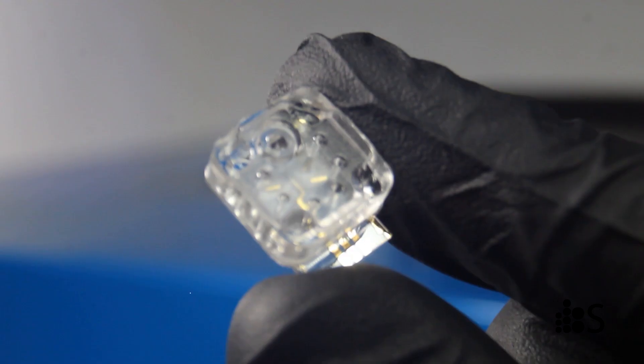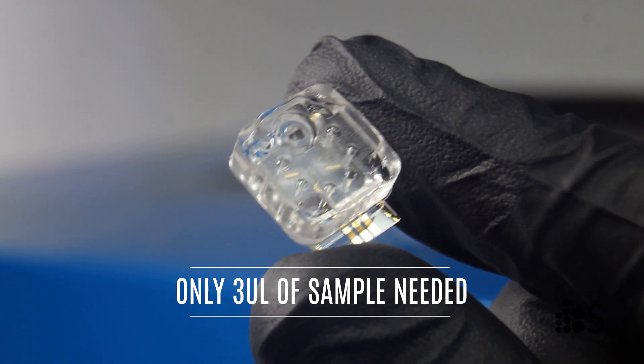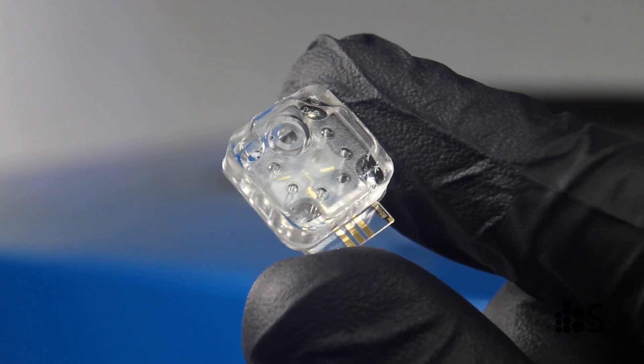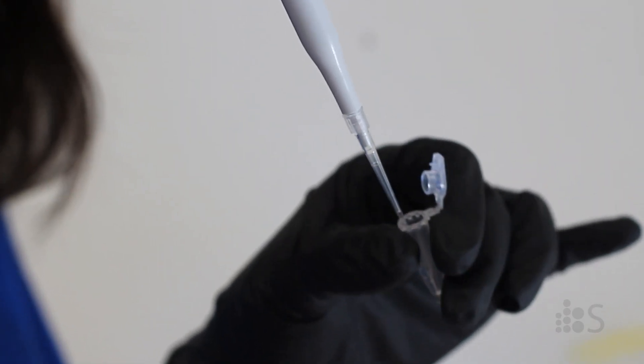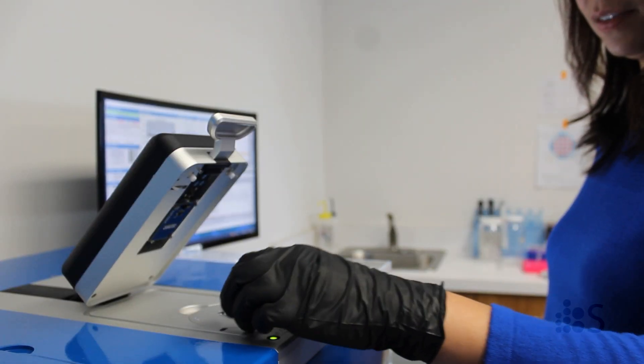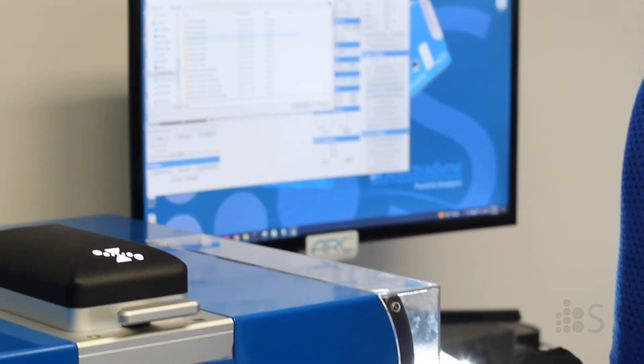The arc uses microfluidic cartridges for sample analysis that require just 3 microliters of the sample for measurement. So, she will pipette 3 microliters into the cartridge, load it into the instrument, and get the instrument ready for measurement.